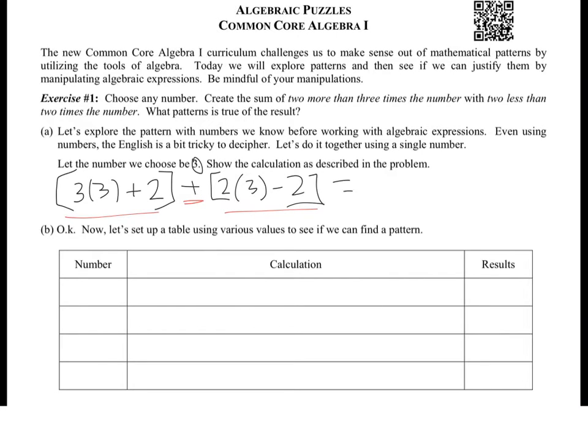So what we have here is we have the sum of our first number and our second number. So the first one, 3 times 3 is 9, 9 plus 2 is 11. And then 2 times 3 is 6, 6 minus 2 is 4. So our answer is 15.